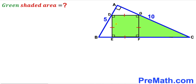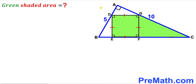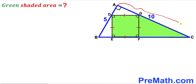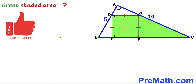Welcome to pre-math. In this video we have a square DEFG fully inscribed in a right triangle ABC. Side length AB is 5 units and side length AC is 10 units. Our task is to calculate the area of the green shaded region — this area and this area combined. Please don't forget to give a thumbs up and subscribe.